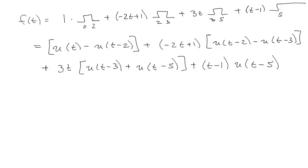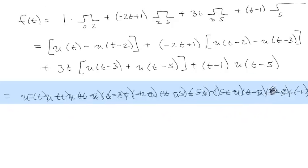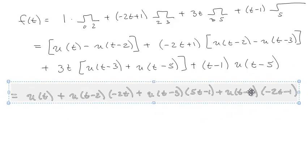And I have to group like terms and all that kind of stuff so I can do that. So I've got u of t, and then it's going to be u of t minus 2 times negative 2t, and then u of t minus 3 times 5t minus 1, and then u of t minus 5 times minus 2t minus 4. There it all is. Amazing. Very exciting.